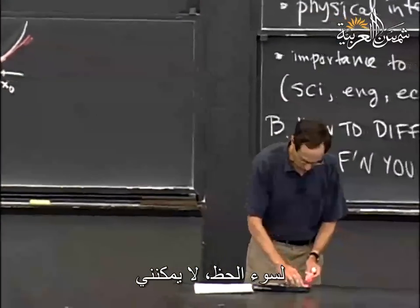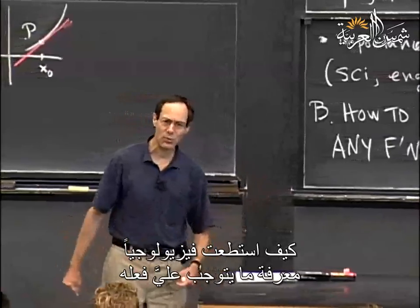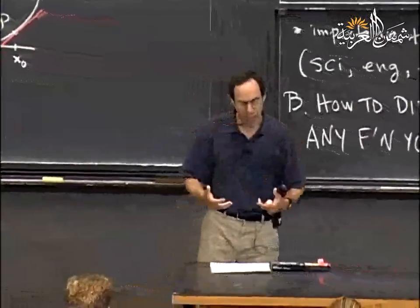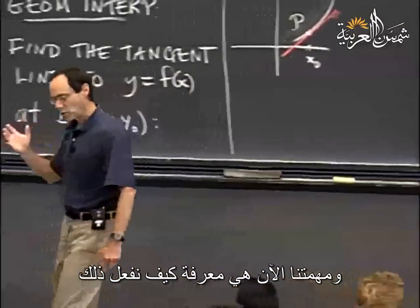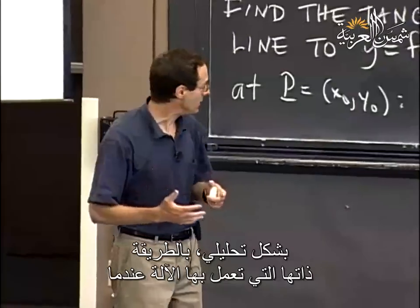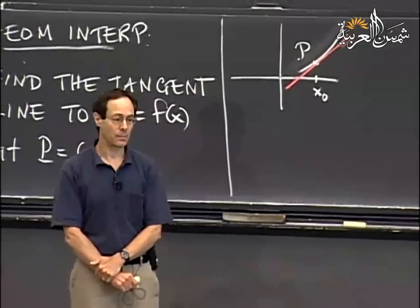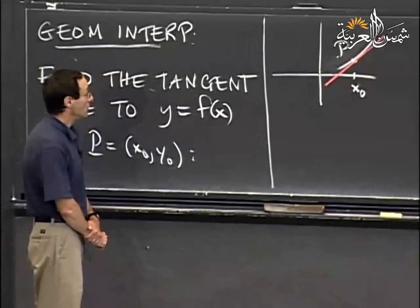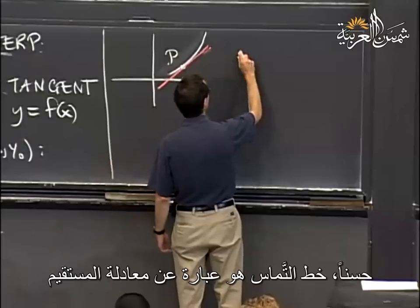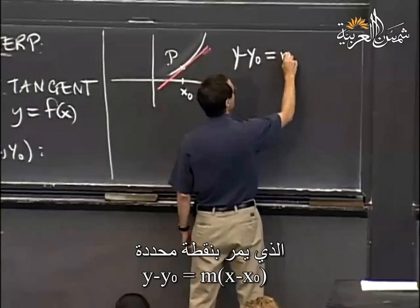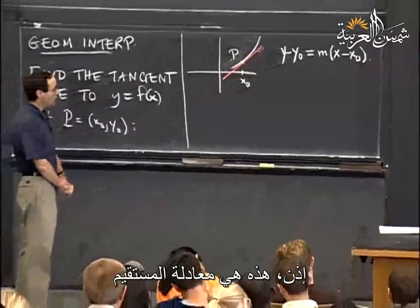We visualize it and figure it out somewhere in our brains. The task we have now is to figure out how to do it analytically — in a way that a machine could do just as well. A tangent line has an equation: any line through a point has the equation y minus y₀ equals m times x minus x₀, where m is the slope.